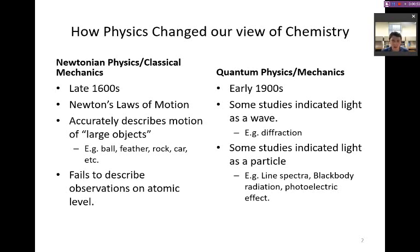Thanks to work that was done by early pioneers in quantum chemistry, we have a better understanding of the minuscule world, the microscopic world. Studies were done that indicated that light behaved as a wave using diffraction. Studies were done that indicate light behaving as a particle. We see that line spectra falls into that category, black body radiation and the photoelectric effect. And so we have this conflicting idea that light behaves both as a particle and as a wave.